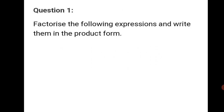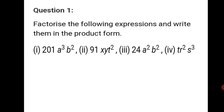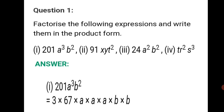Question 1: Factorize the following expressions and write them in the product form. Starting with the first: 201a³b². Factorizing 201 by dividing by 3 gives factors 3 × 67. a³ can be written as a × a × a since it is raised to the power of 3, and b² is written as b × b. So 201a³b² = 3 × 67 × a × a × a × b × b.